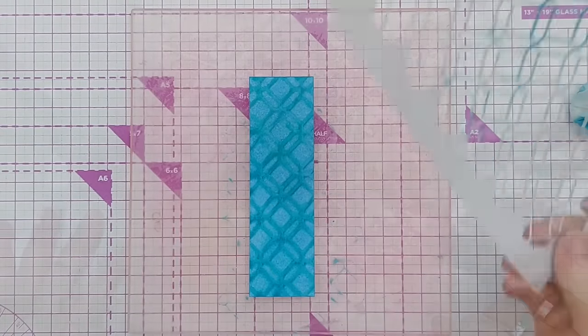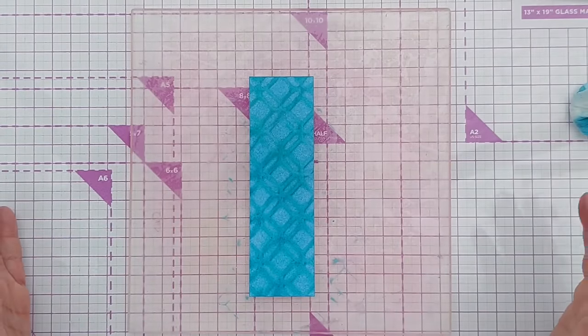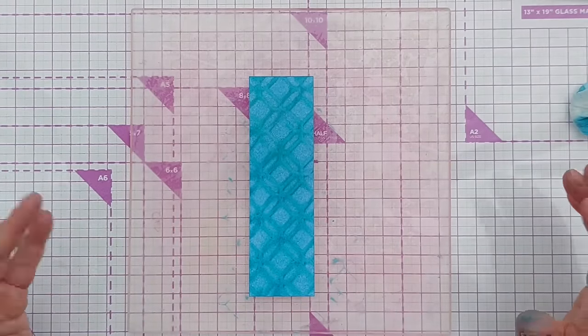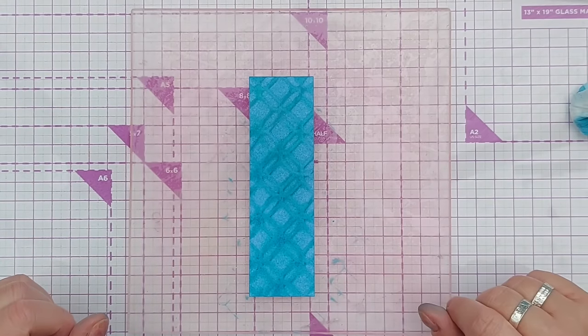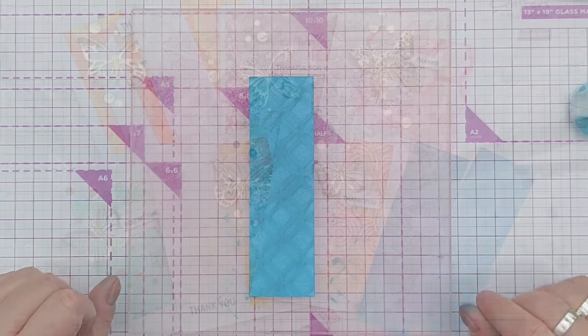And then you can take off your stencil and you can leave it to dry naturally or dry it with a hairdryer and there you have again a toned down more muted background with a bit of pattern on it.